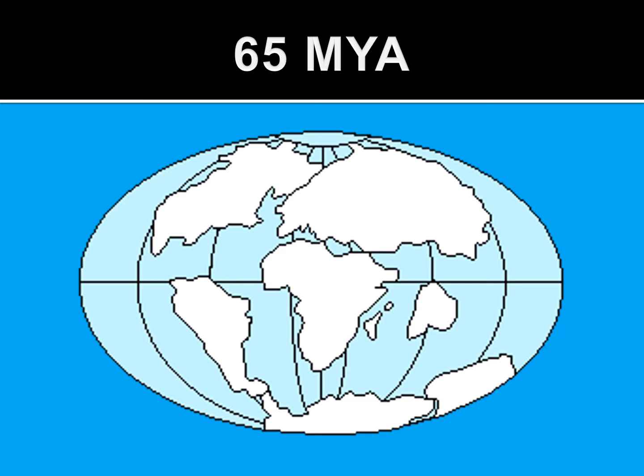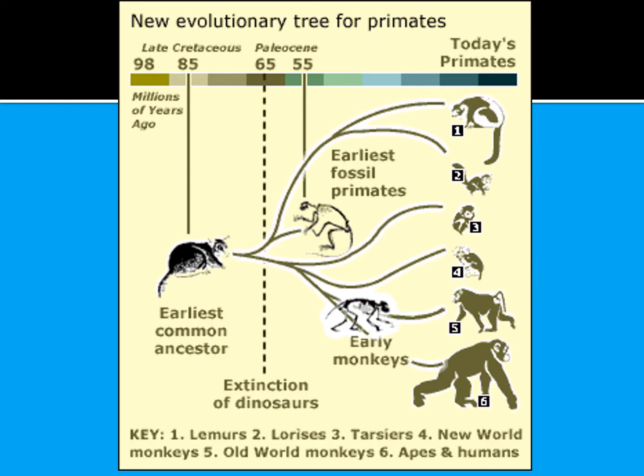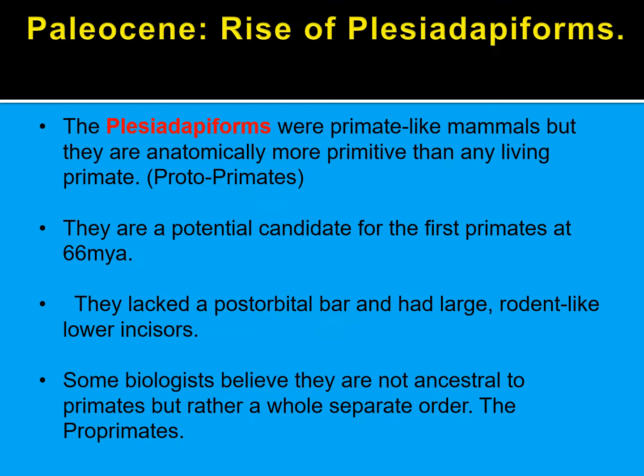At 65 million years ago, Africa was connected to Asia, and Asia and North America were connected. South America and the Indian subcontinent were somewhat disconnected. Looking at a new evolutionary tree for primates, we have our earliest common ancestor at around 85 million years ago — we have no clue what creature that is. Around 65 million years ago we start to see some divergence, and around 55 million years ago we find our earliest primate fossils, followed by differentiation into monkeys, and then apes.